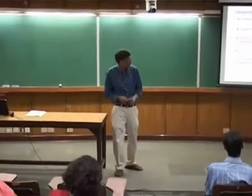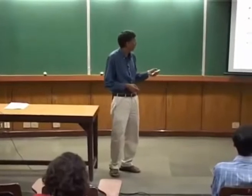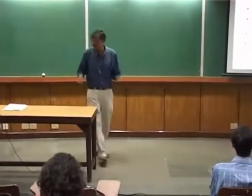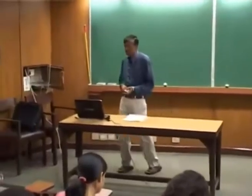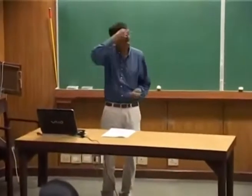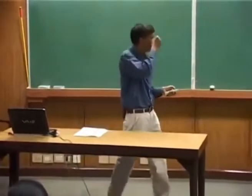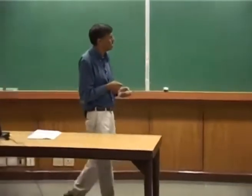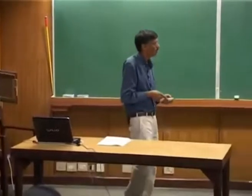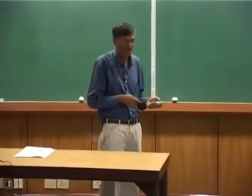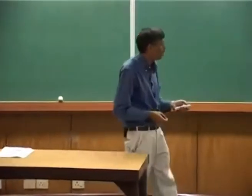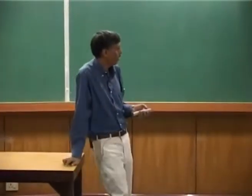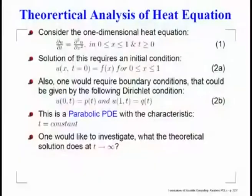This is done specifically for a finite domain, with x non-dimensionalized so that it lies between 0 and 1. You start off with some initial condition at t = 0, given on the second line, and study the evolution of the solution with space and time. Because you have a finite domain, there is a possibility that you could apply some input through those boundaries — which we call boundary conditions — at fixed x = 0 and x = 1.